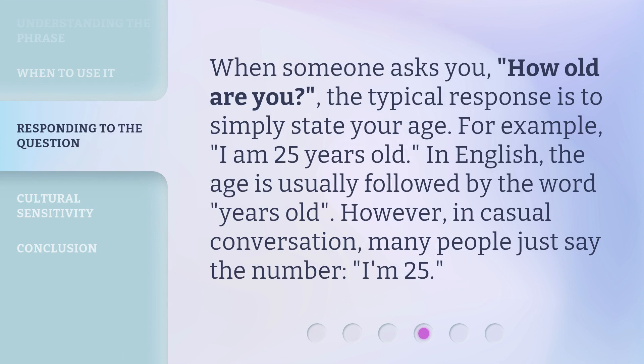When someone asks you, how old are you, the typical response is to simply state your age. For example, I am 25 years old. In English, the age is usually followed by the words years old. However, in casual conversation, many people just say the number, I'm 25.